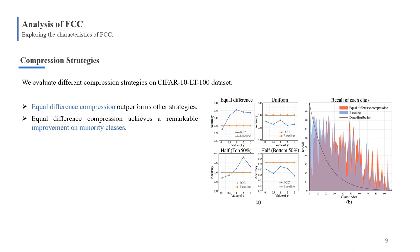Next, we will introduce the analysis of FCC. Equal difference compression outperforms other strategies. Meanwhile, we show the recall of each class. FCC effectively improves the performance on minority classes.